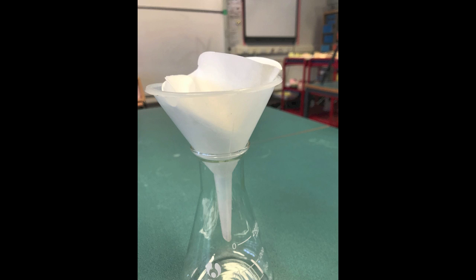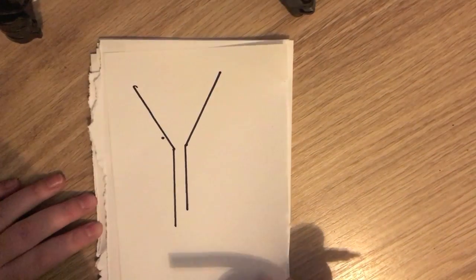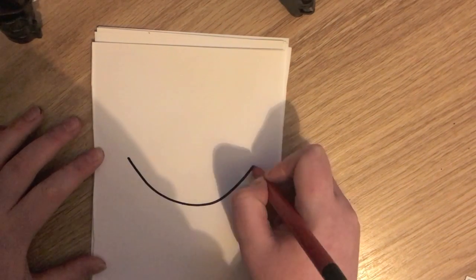Filter funnels and filter paper are used to separate solids from liquids. Evaporating dishes are used to heat water and evaporate it from a salt solution often.